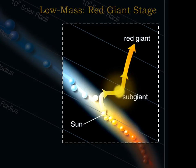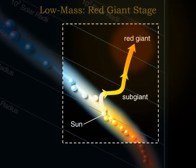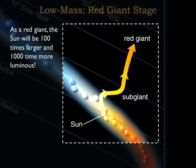Then, as the expansion of the outer layers continues, the sun's luminosity will begin to increase and its life track will turn upward on the HR diagram. Over a period of about one billion years, the sun will slowly grow in size and luminosity to become a red giant. At the end of its red giant stage, the sun will be more than 100 times as large in radius and more than 1,000 times as bright in luminosity as it is today.